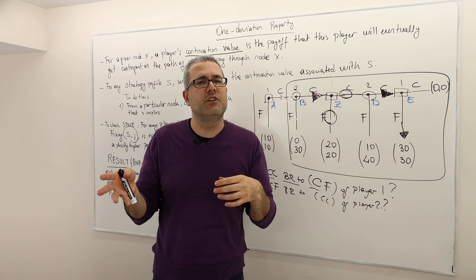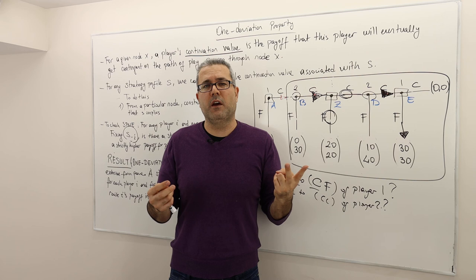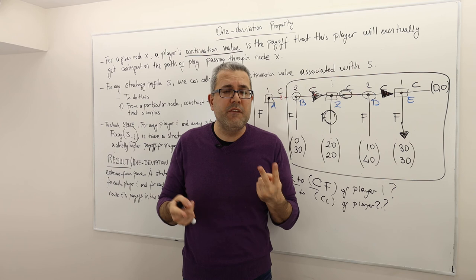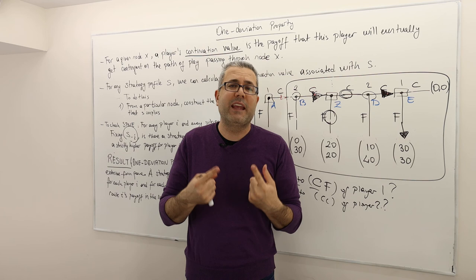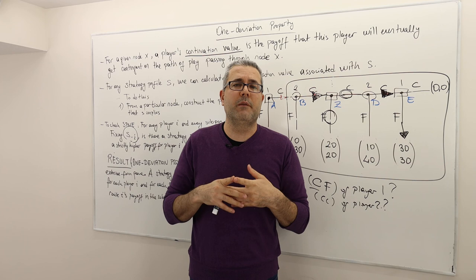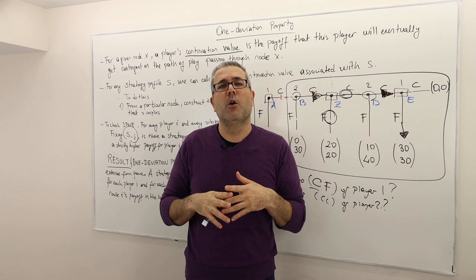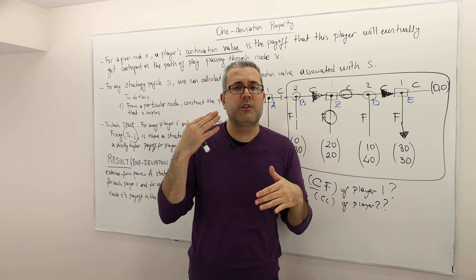So one deviation property and subgame perfect Nash equilibrium are equivalent, just as backward induction and SPNE are equivalent. The bottom line is there are two ways to find SPNE: one, backward induction; two, use the one deviation property. Backward induction is easiest here, but you cannot use it in every game. For complicated games with too many subgames or infinite horizons, applying the one deviation property is an easier way of finding the subgame perfect Nash equilibrium.